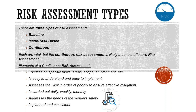Baseline risk assessments generally don't change — your scope of work as a plumber may never change unless you add high-pressure machines, leak detection, or other forms of plumbing. If you're not doing that, your baseline risk assessment generally stays the same and you may be rated a medium-risk contractor. But the issue and task-based risk assessment will change almost every single time you perform an installation.